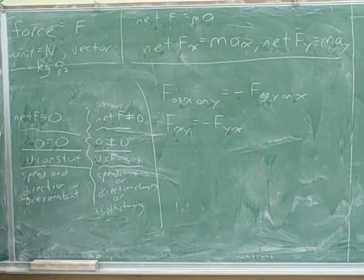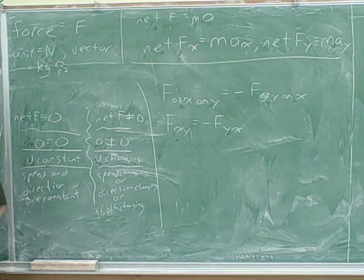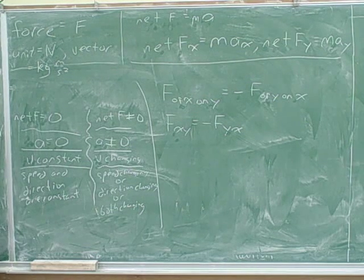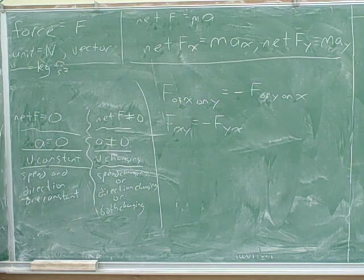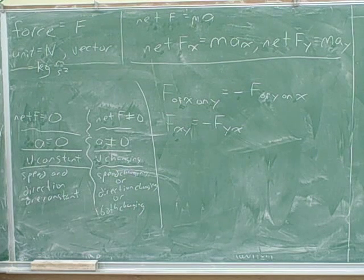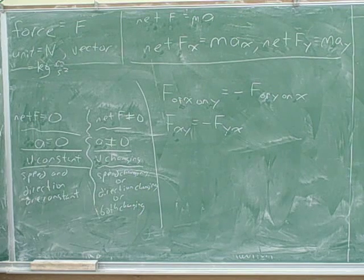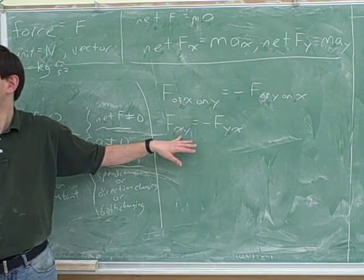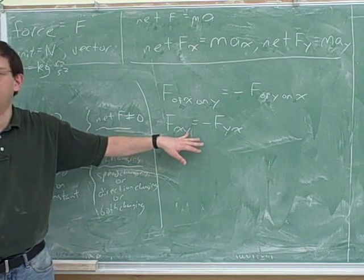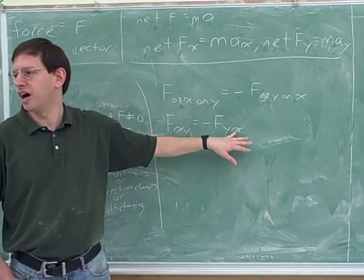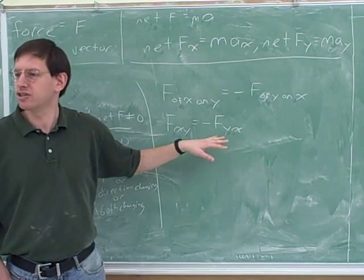The big mistake that people make here is thinking that this makes forces always cancel out. If these are equal in magnitude and opposite direction, why don't they always cancel out, and why isn't there always a net force of zero on any object? Well, all forces come in pairs, so why doesn't the net force on every object cancel out? The reason is these are not on the same object — this is the force on y, and this is the force on x.